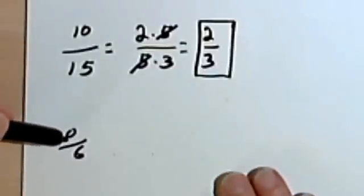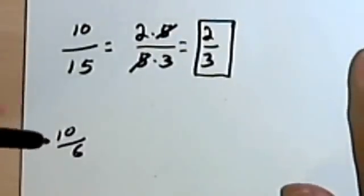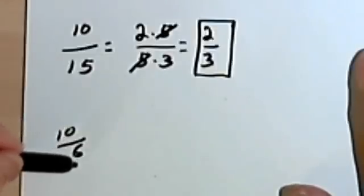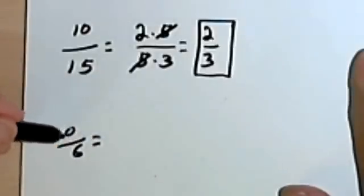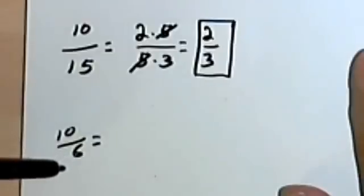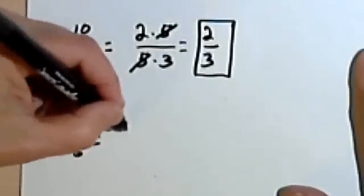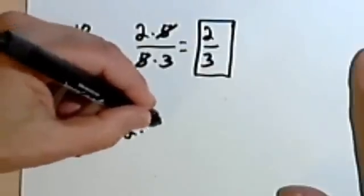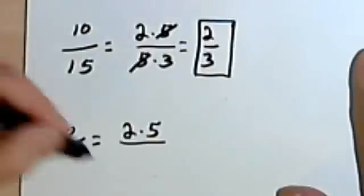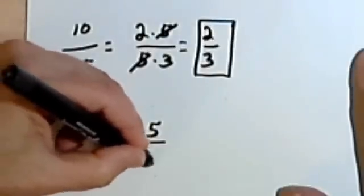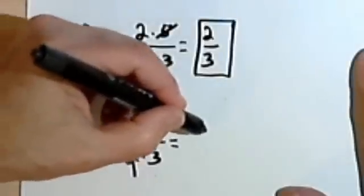Here we've got an improper fraction. There's nothing special about this. All it means when we say an improper fraction is that the numerator is bigger than the denominator. Once again, I'll find the number I can divide into both of them. In this case it's going to be 2, and I can rewrite this as 2 times 5 and rewrite this as either 2 times 3 or 3 times 2, cross these out, and I get 5 thirds.